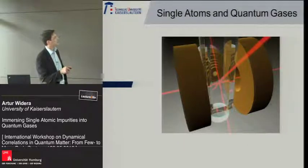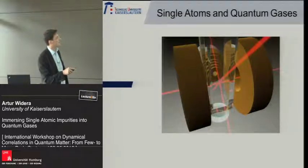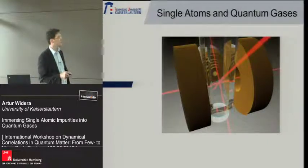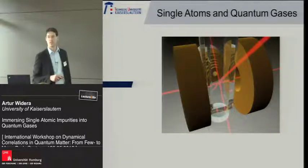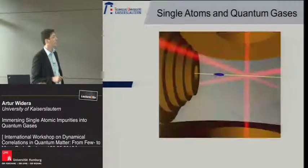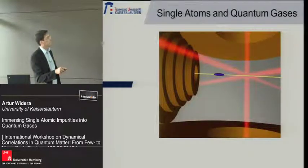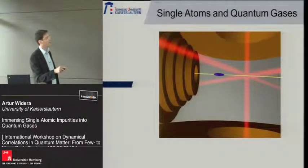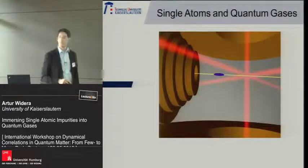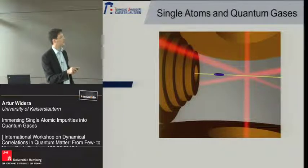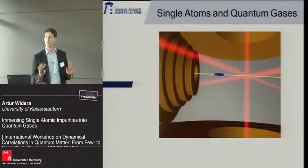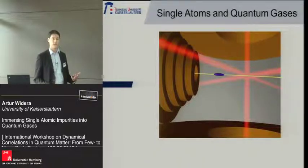Now I want to show how far we have gotten in combining these two systems to immerse single atoms. Everything takes place in a high-vacuum system. We have a single-atom MOT at the position of crossed laser beams, coils to prepare a degenerate Bose gas, and optics for fluorescence detection of the single atom or absorption imaging of the many-body system. Here is the position of the single-atom MOT, and for technical reasons, the Bose-Einstein condensate is in a QUIC-type trap located a few millimeters away.